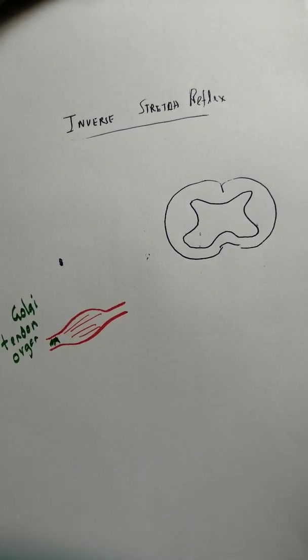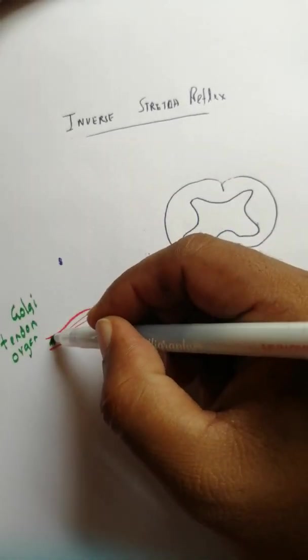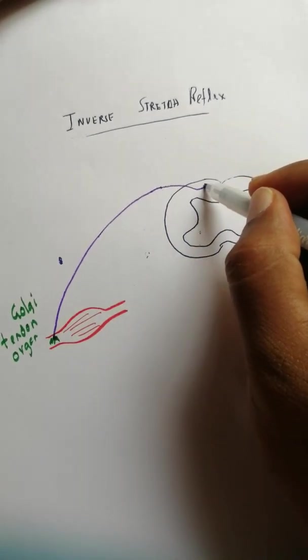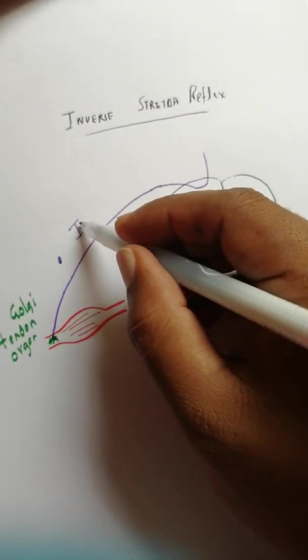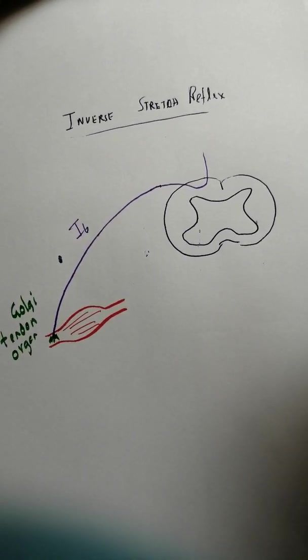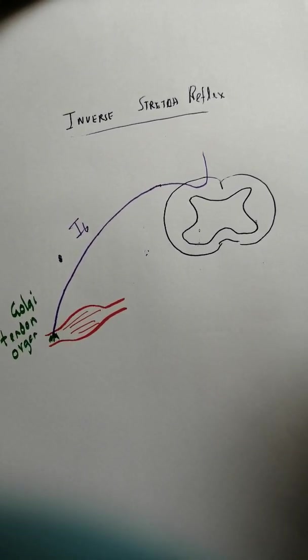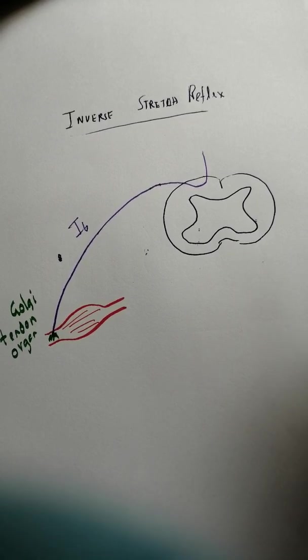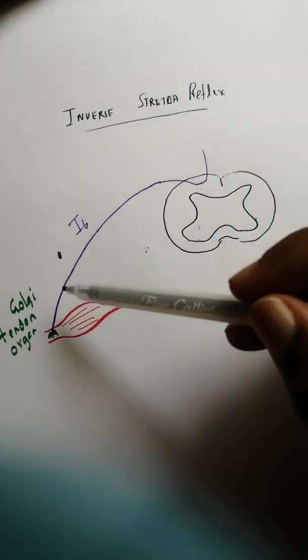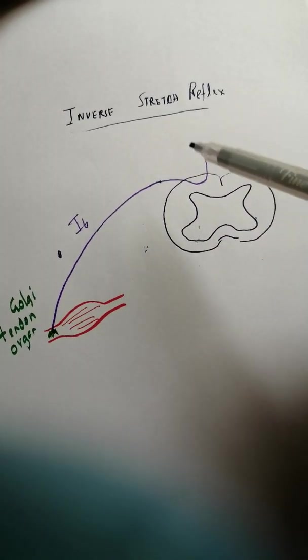This Golgi tendon organ will send impulses via the 1B fiber. In stretch reflex we discussed the 1A fiber based on the Lloyd hunt classification. If you don't remember the Lloyd hunt classification please look it up - it's a classification of sensory fibers.